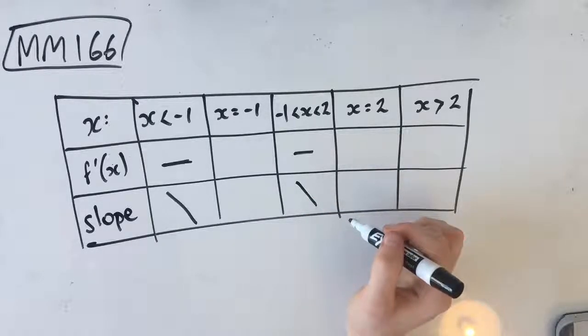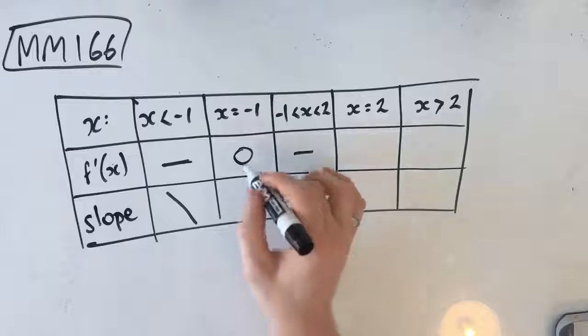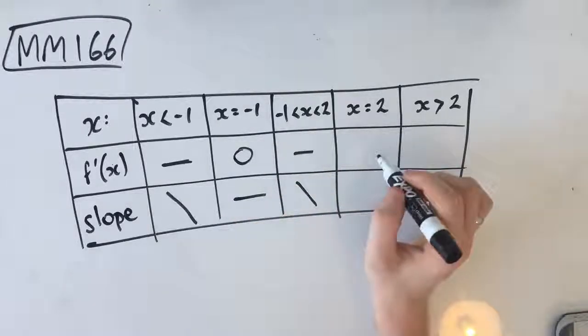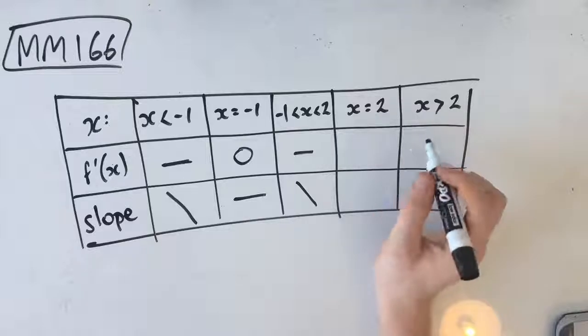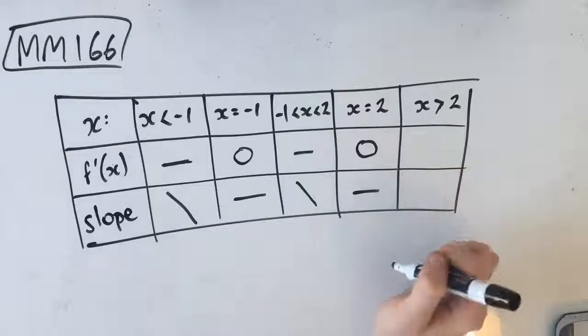Our next condition says that f dash of x is equal to 0 where x equals negative 1. So x equals negative 1, our f dash of x is 0, and our slope of a gradient of 0 is flat, right? Stationary point. Our next condition says that f dash of x equals 0 where x equals 2. So at x equals 2, our gradient again is 0, which again is flat.